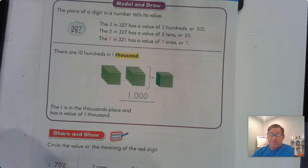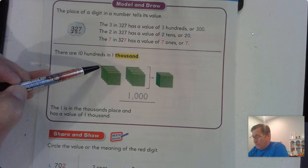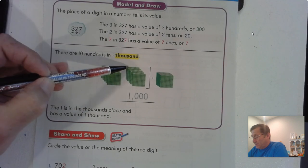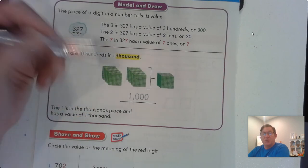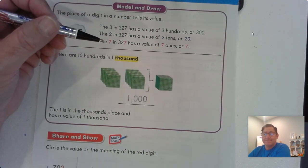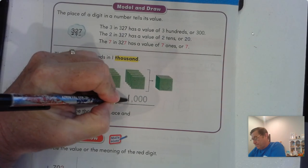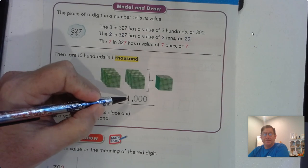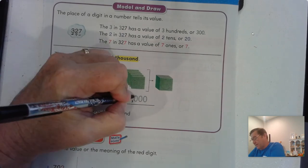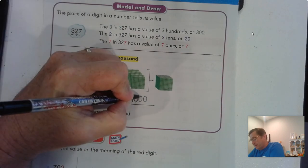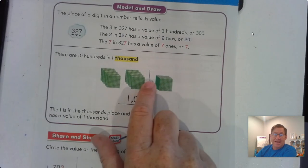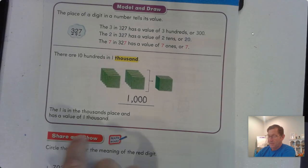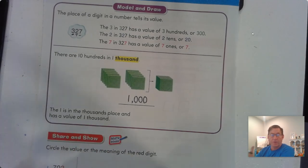In a thousand there are ten hundreds, and we can count that here: one hundred, two hundred, three hundred, four hundred, five hundred, six hundred, seven hundred, eight hundred, nine hundred, a thousand. A thousand you can represent with a cube. So we write one thousand as a one in the thousands place, comma, zero hundreds, zero tens, zero ones — because we traded the ten hundreds for a thousand. The one is in the thousands place and has a value of one thousand.